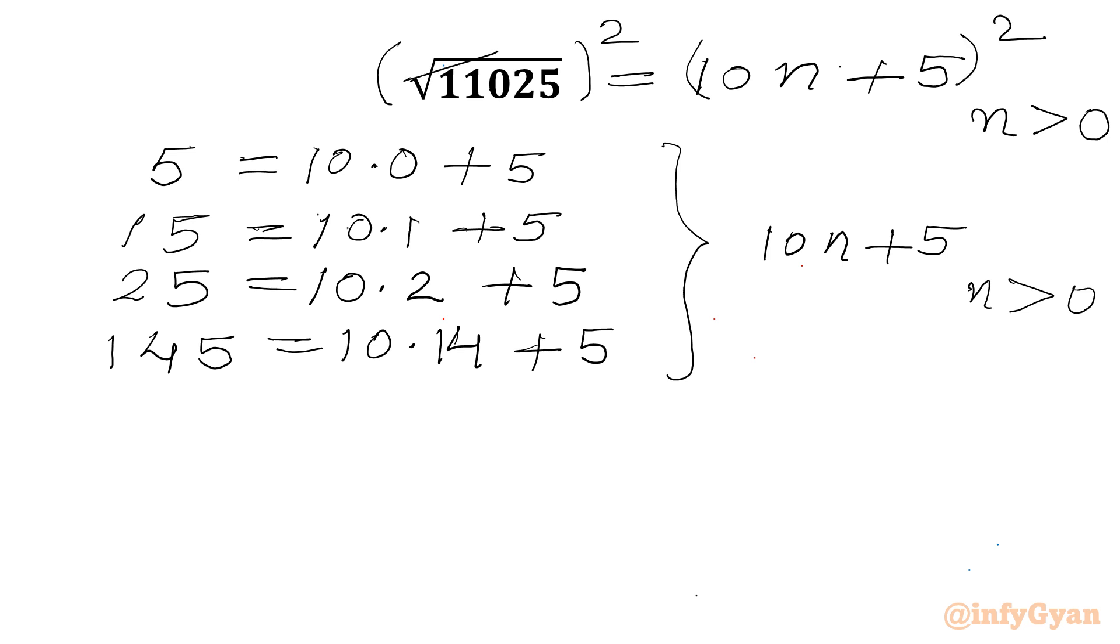Now square root and square will be cancelled out. So I can write 11,025 will be equal to 10n plus 5 whole square.